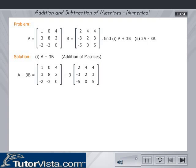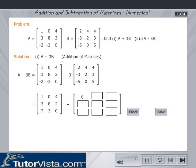So first multiply each element of matrix B by 3 and obtain matrix 3B. An illustration is shown to obtain the first row, first column element of matrix 3B. Go ahead and key in the values.